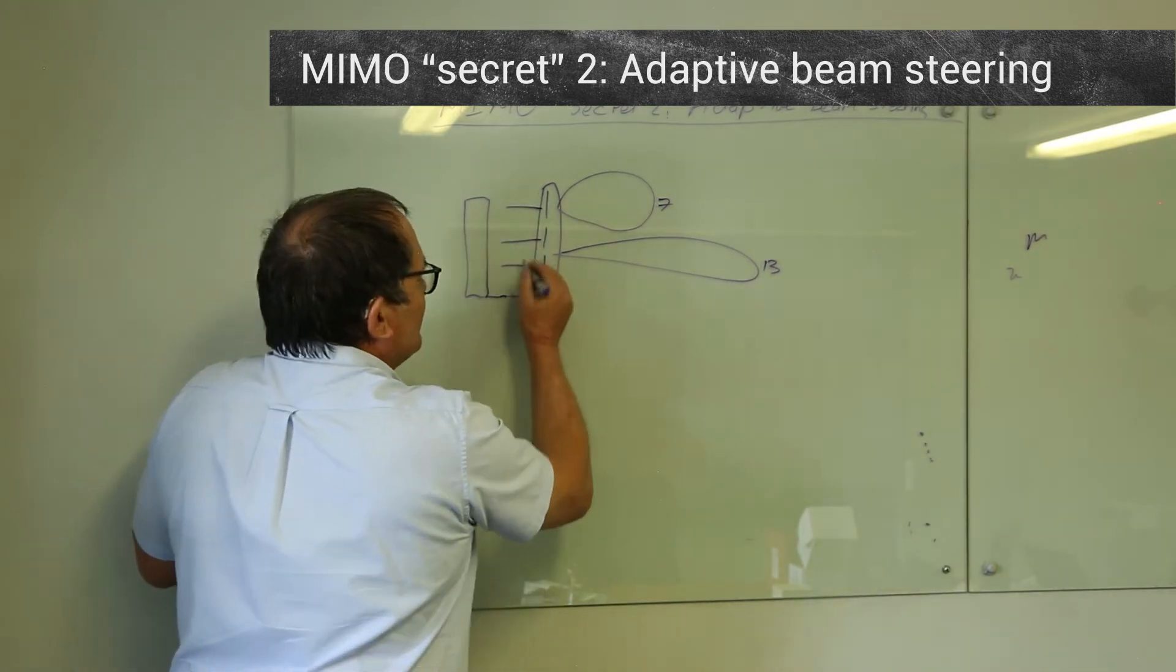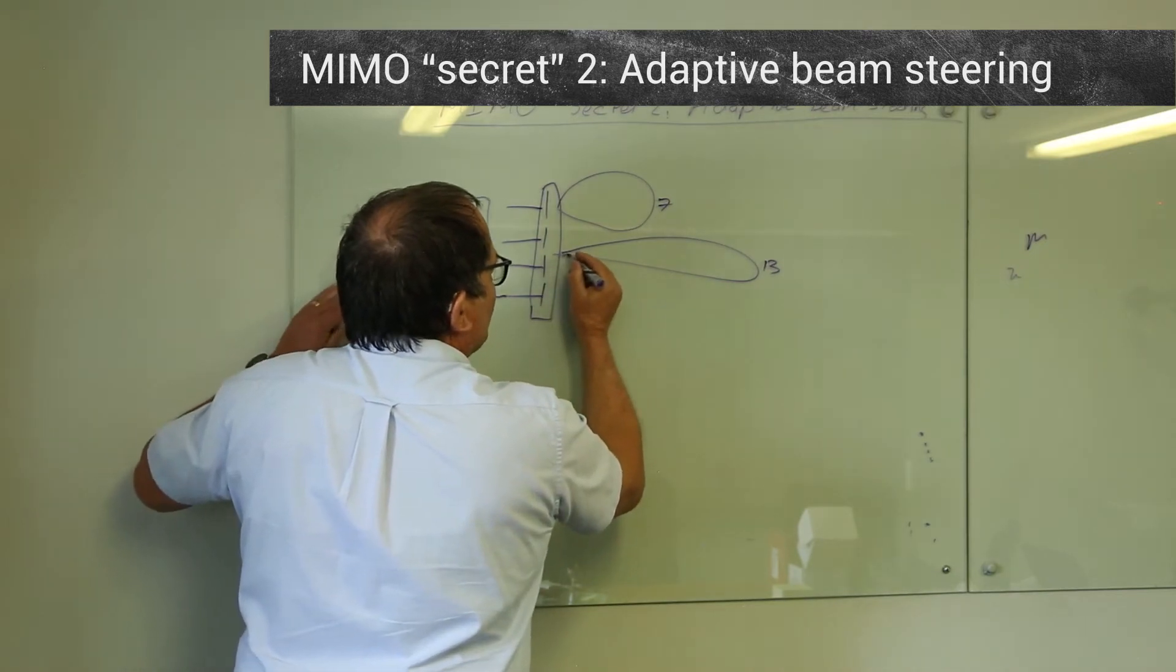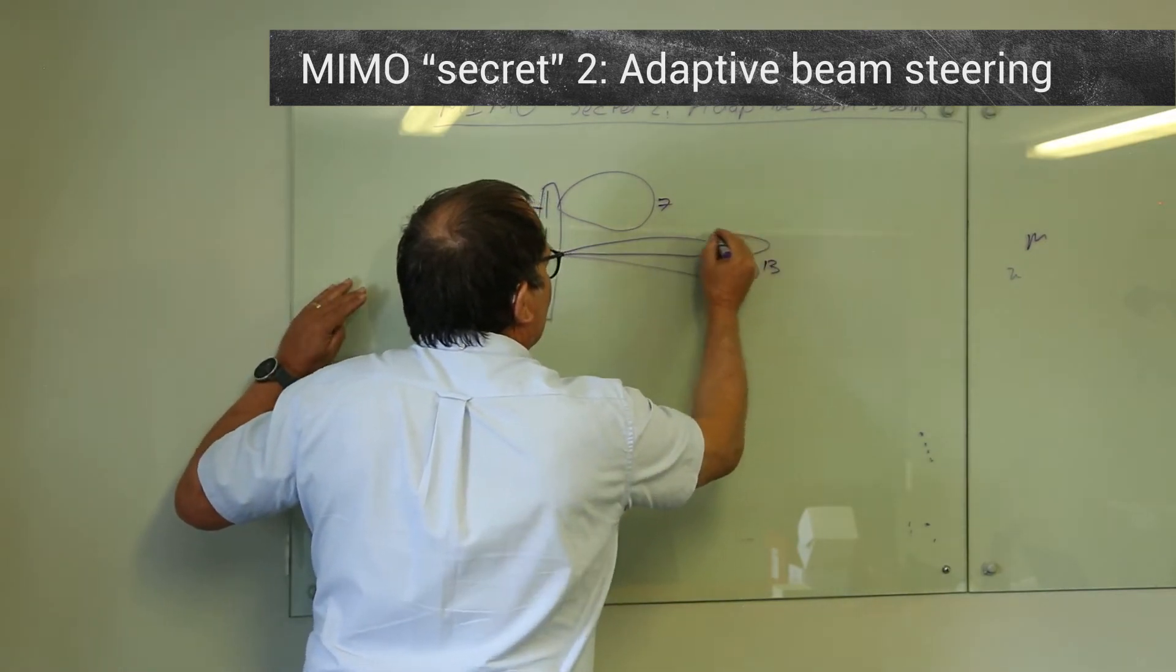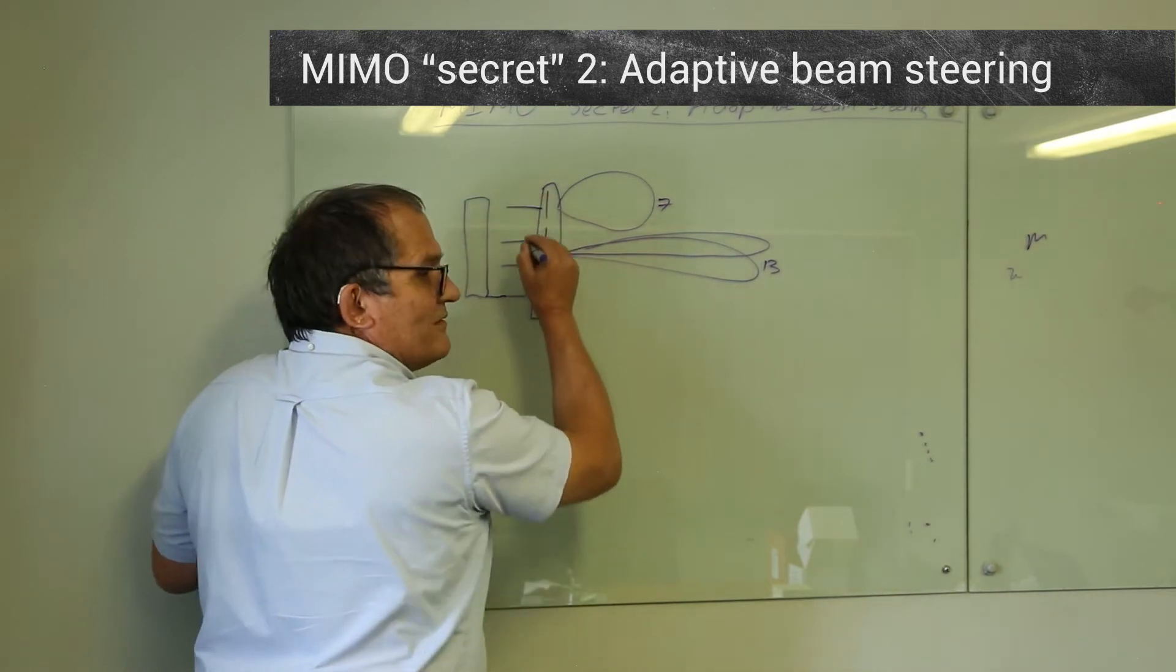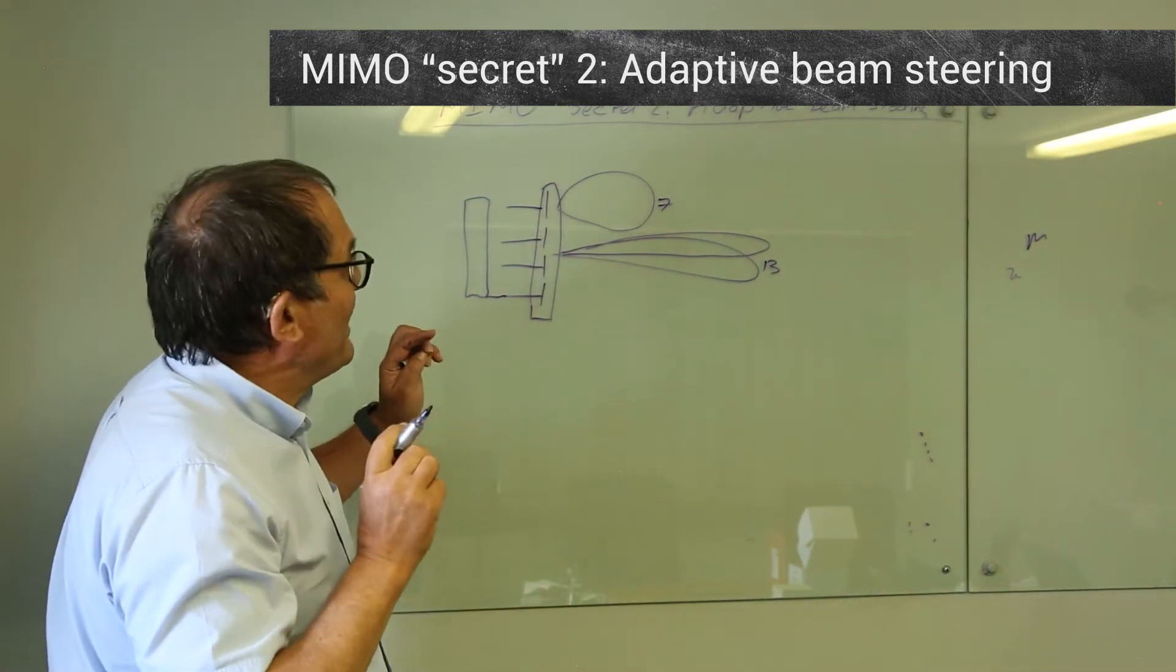So if the boat tilts a bit like this, I can steer this beam upwards by just introducing a little phase change, and the MIMO box will do that automatically.